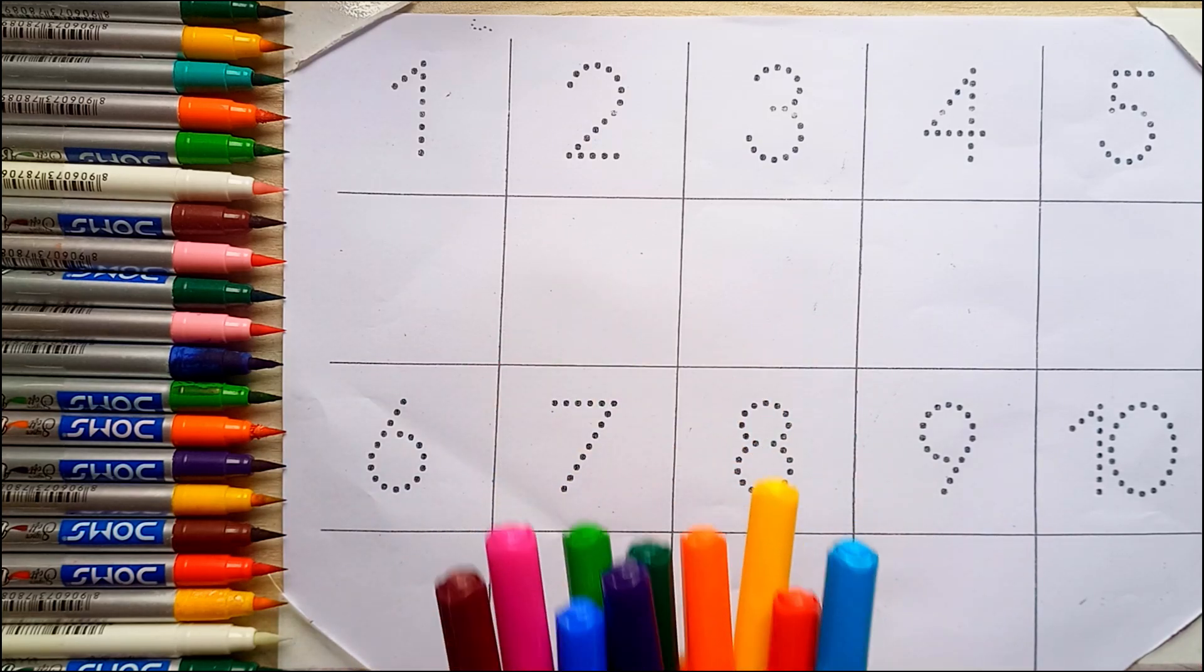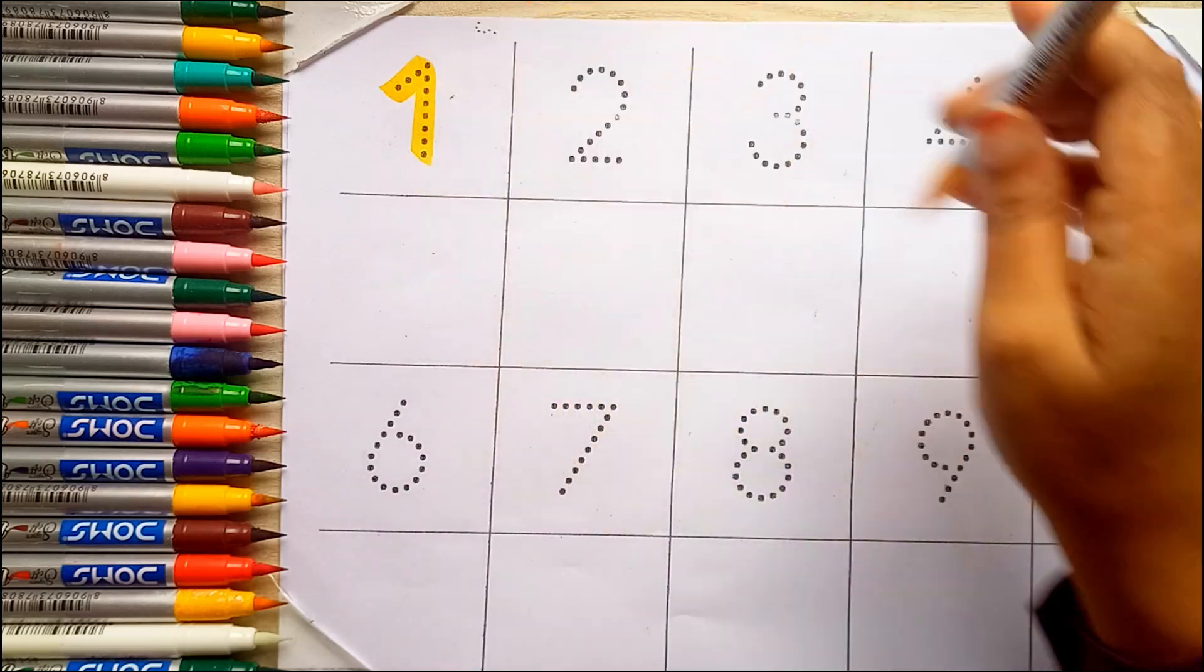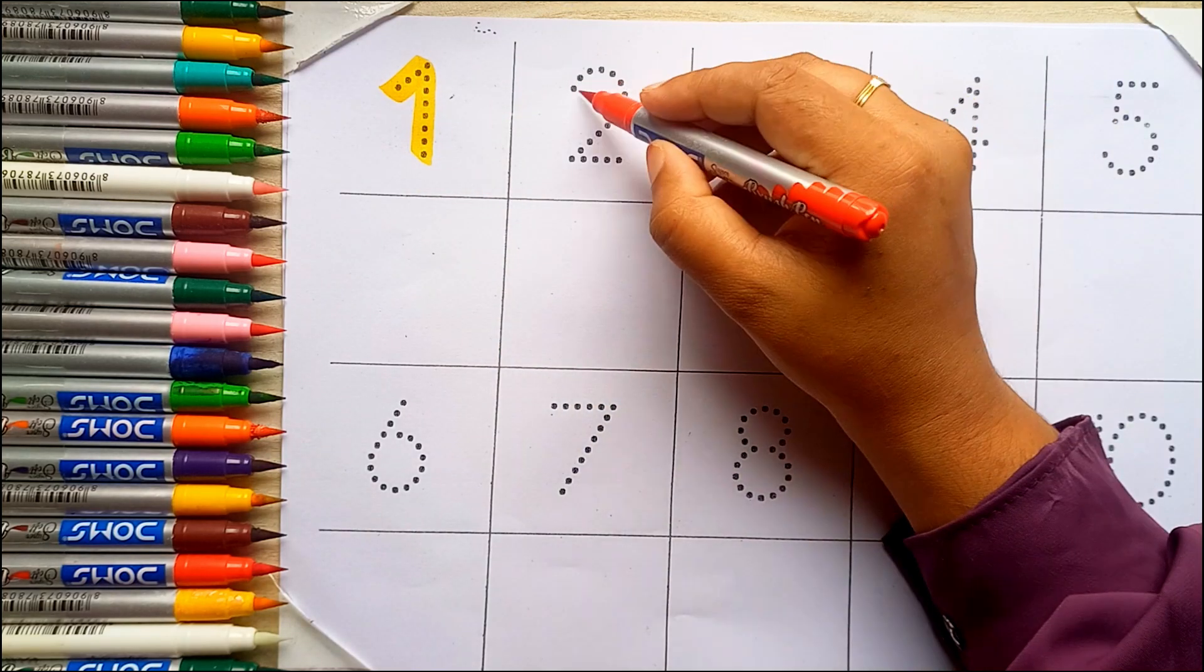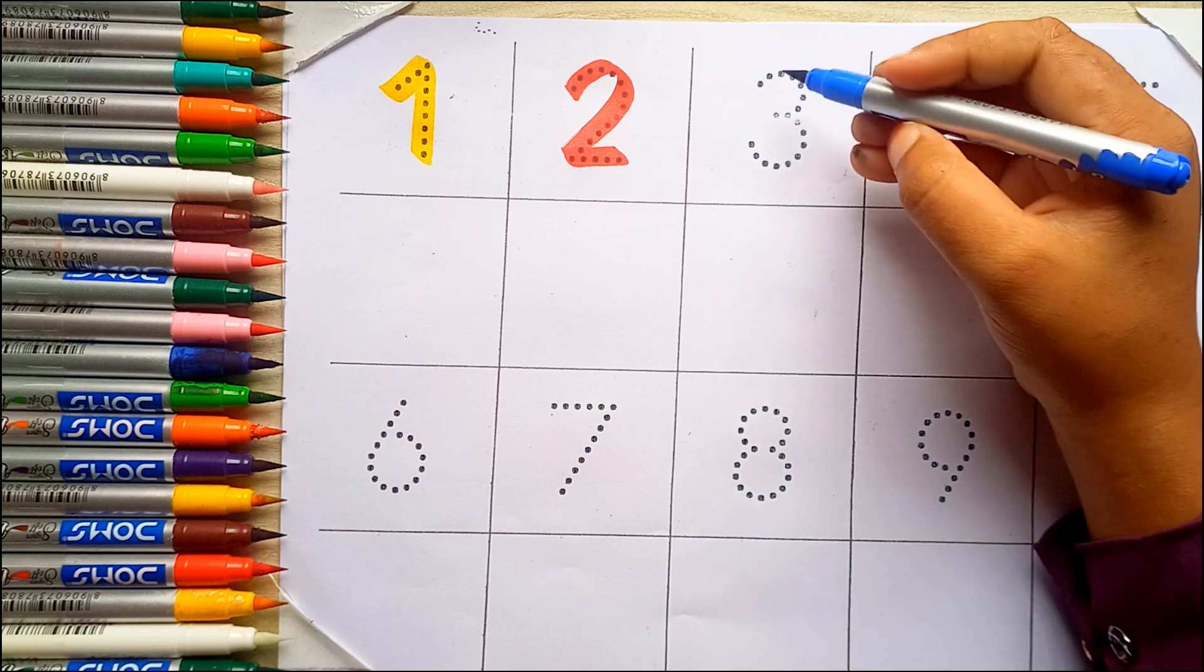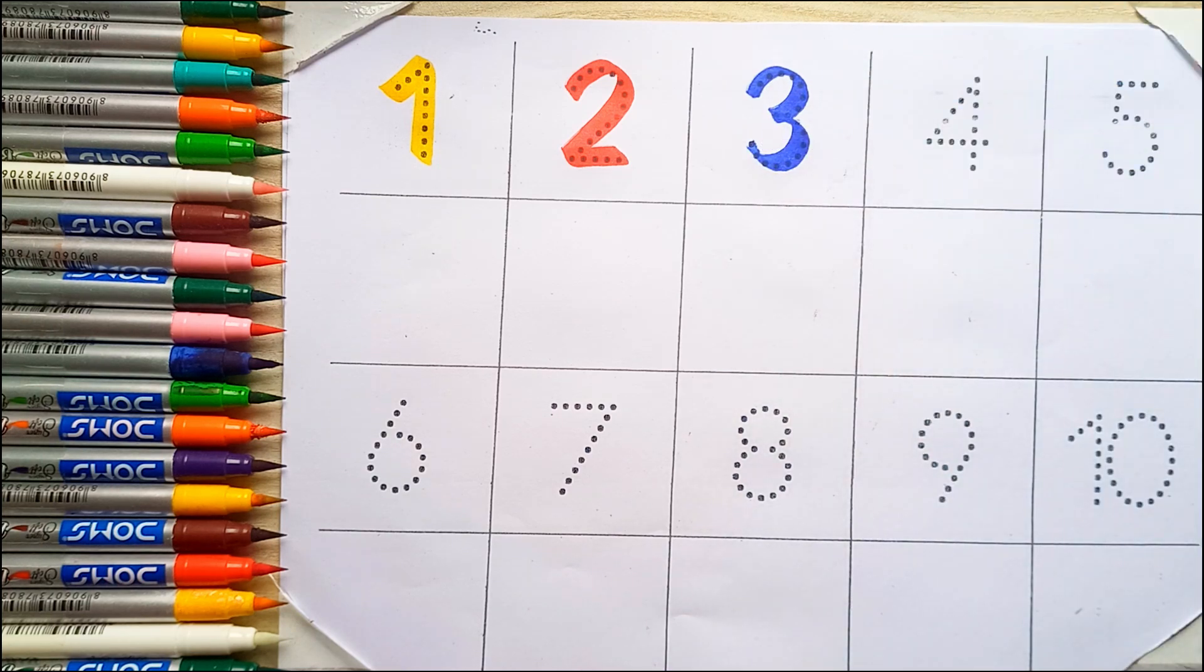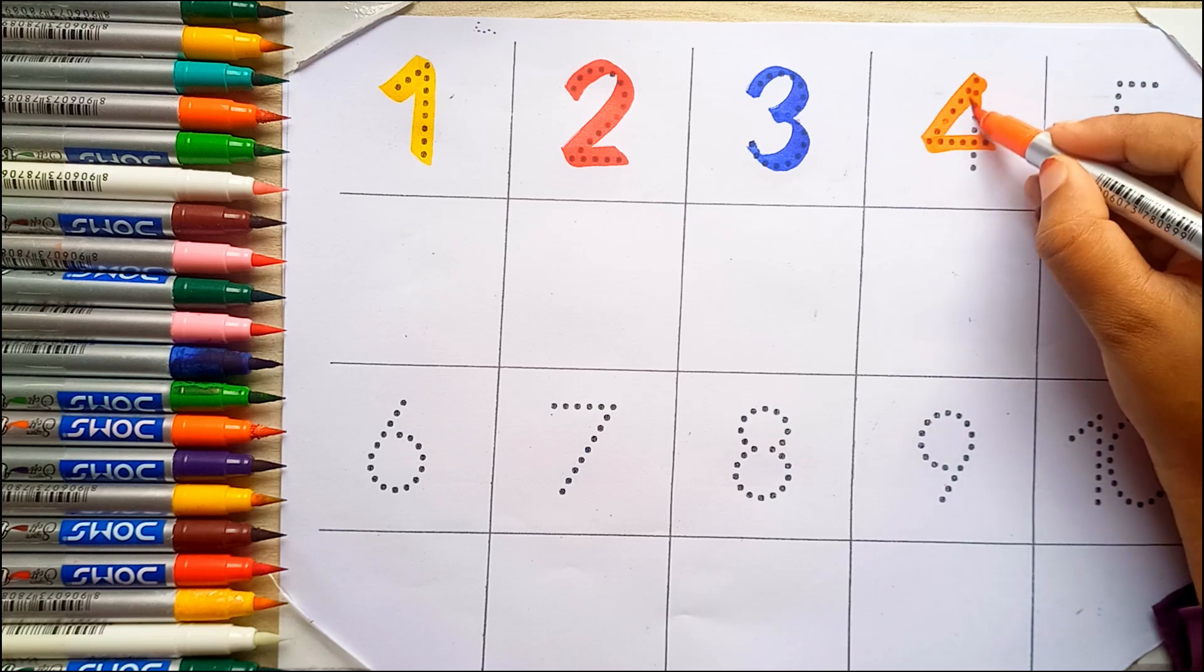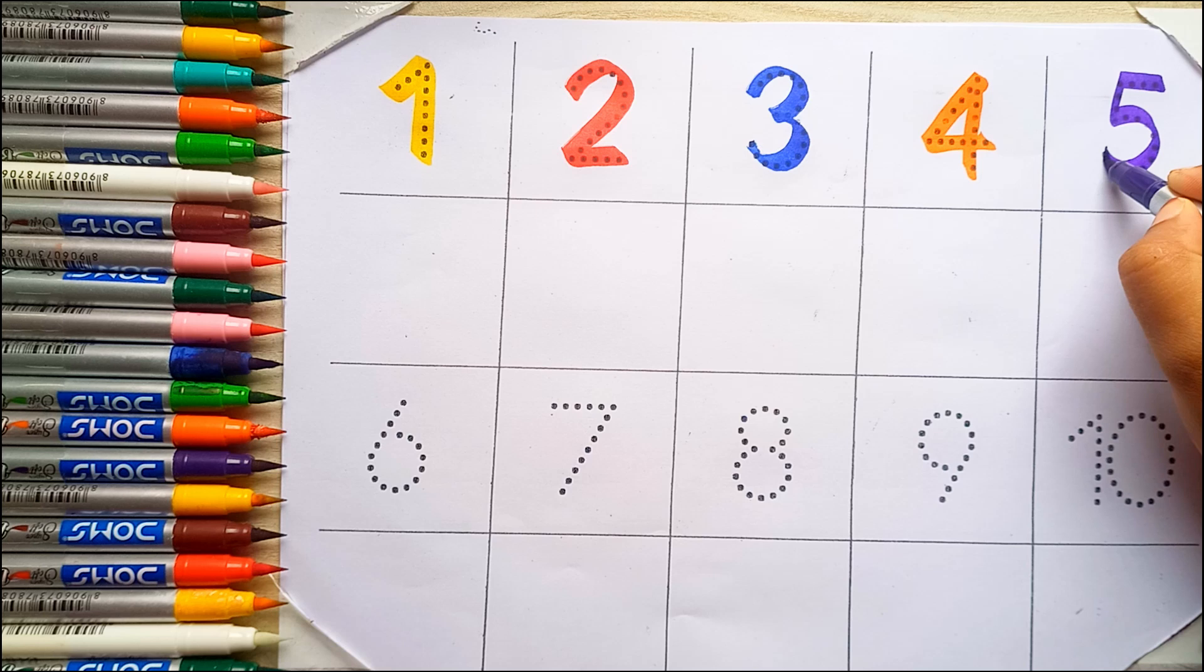Let's start with colors. Yellow color, 1. Red color, 2. Blue color, 3. Orange color, 4. White color, 5.